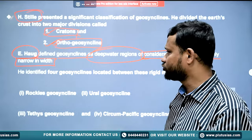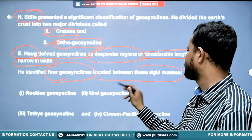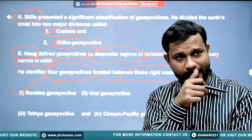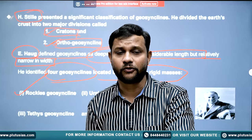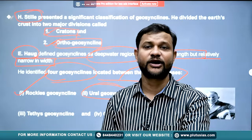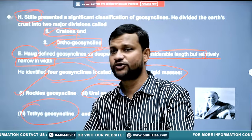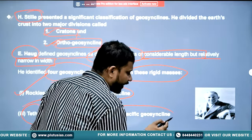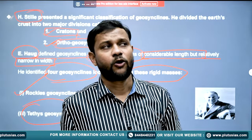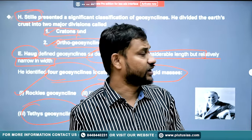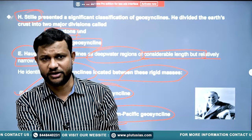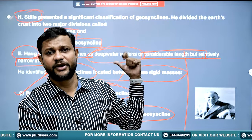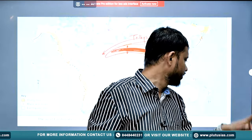The earth's surface is basically made up of cratons and orthogeosynclines. Hogg identified four major geosynclines: the Rocky geosyncline, which led to the formation of the Rocky Mountains; the Ural geosyncline, which gave rise to the Ural Mountains; the Tethys geosyncline, which gave rise to the Himalayas and Alps; and the Circum-Pacific geosyncline, around Australia, which connects with the Great Dividing Range and other folded mountain regions.